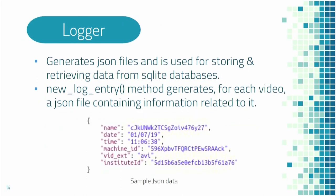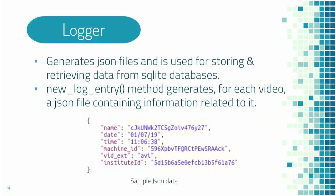The third module is the Logger, used to generate JSON files. The JSON file contains information related to the video such as the name of the video, time and date of creation, institute ID, machine ID, and the video file extension. The new_log_entry method is used to generate the JSON file. This module is also used to store and retrieve data from the SQLite database.